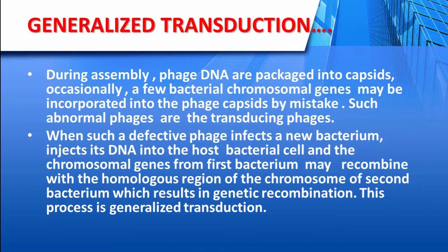When such a defective transducing phage infects a new bacterium, it introduces its DNA — carrying a few chromosomal genes of the first bacterium — into the host cell. These chromosomal genes may then recombine with the homologous region of the chromosome of the second bacterium, resulting in genetic recombination. An example of a generalized transducing phage is P1.